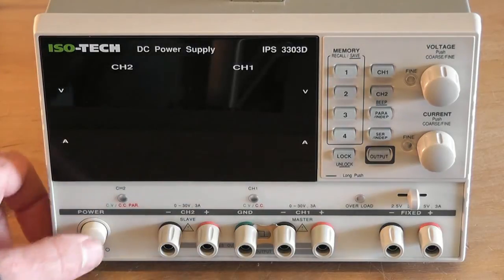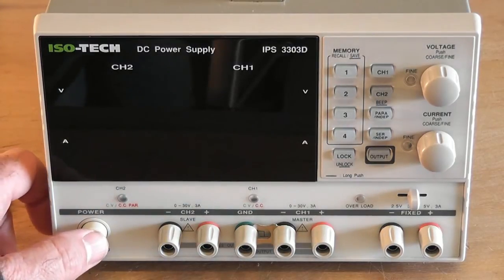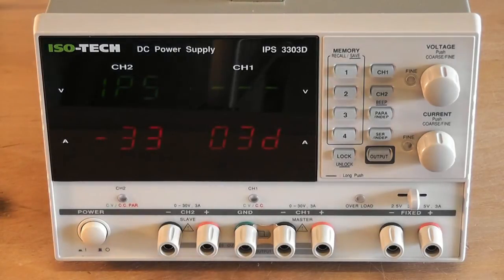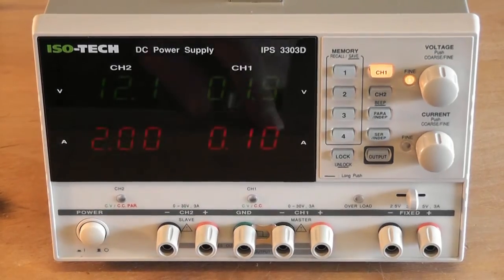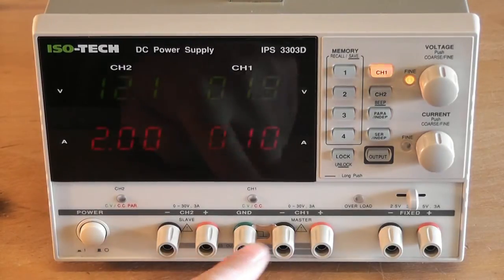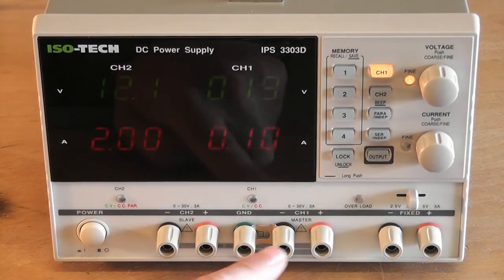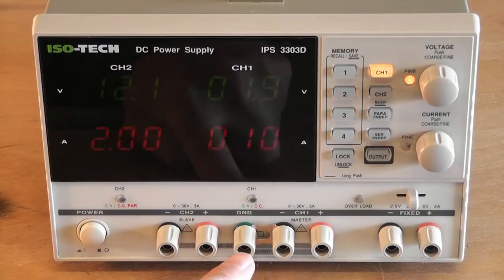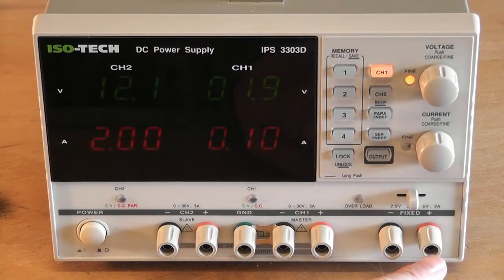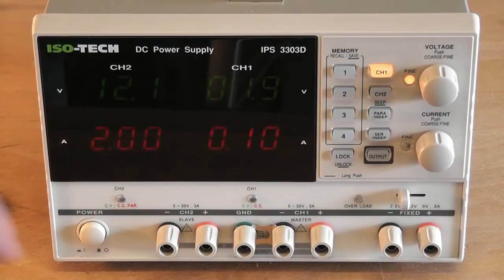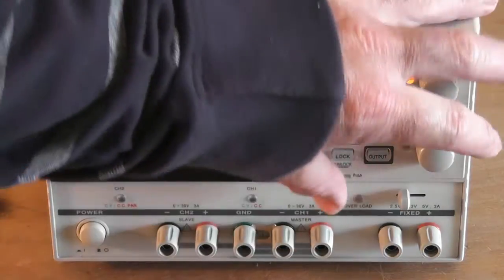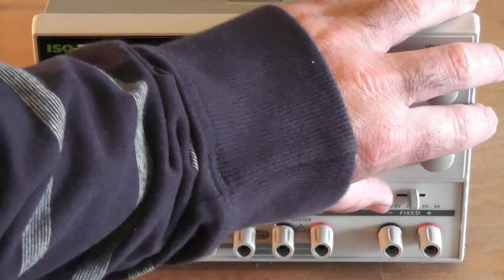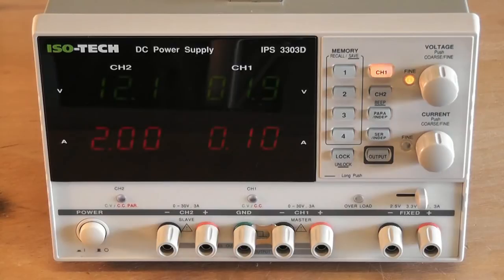Let's power it up. Here's the on-off switch down here. Tells you it's a 3303D and now it's ready for use. So basically we've got three outputs. Channel one plus and minus, channel two plus and minus. These two are both adjustable. And on the third channel, this fixed channel, the outputs can be 2.5 volts, 3.3 volts or 5 volts with a maximum of 3 amp output.